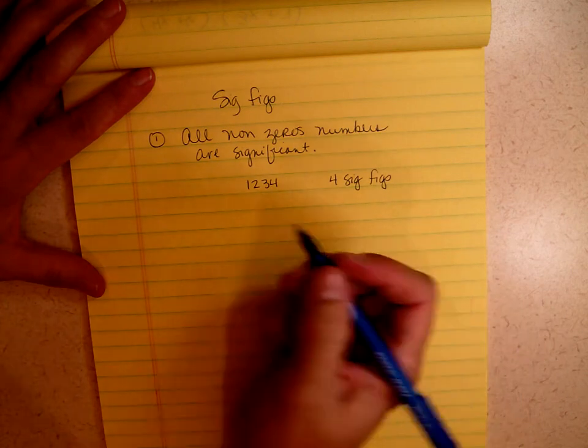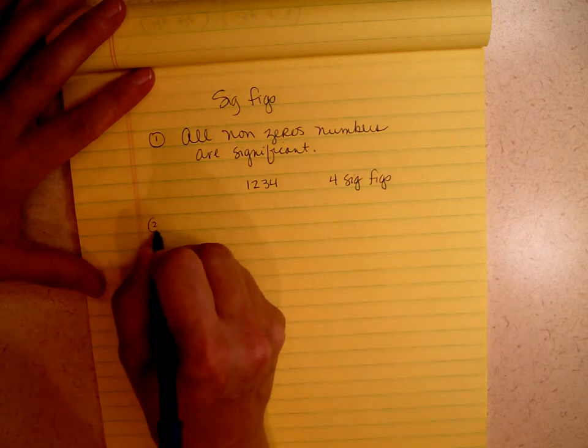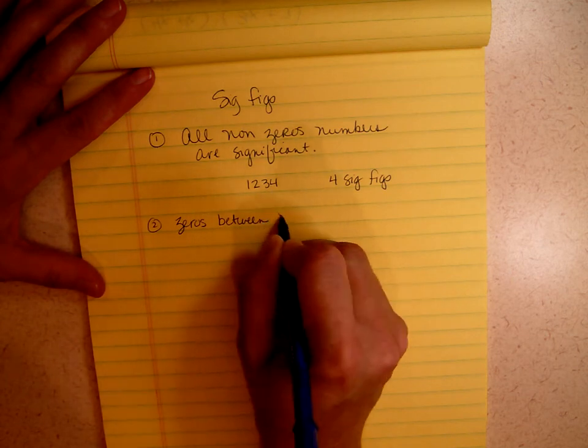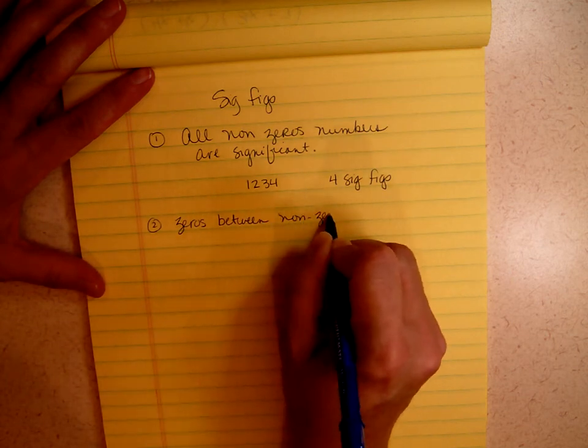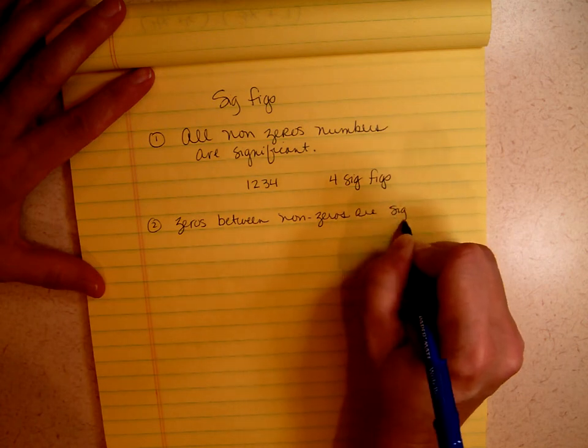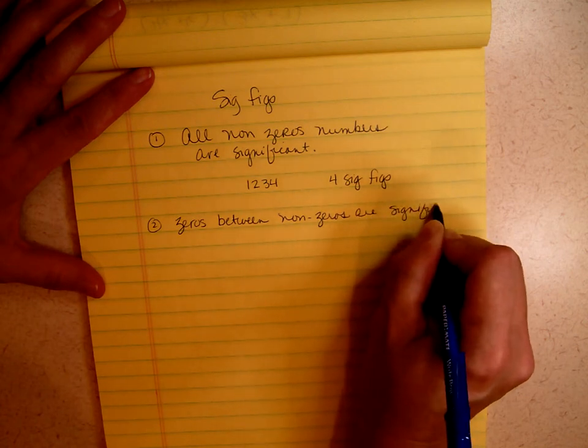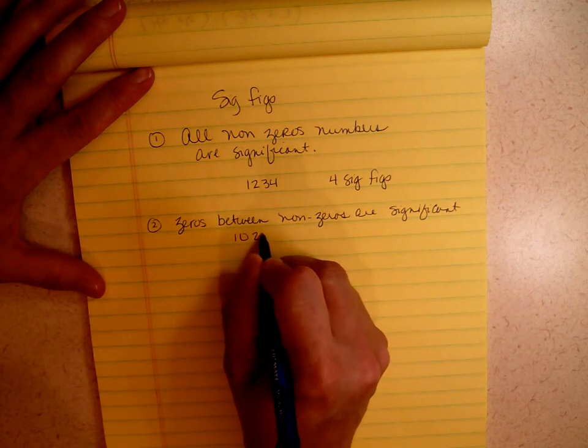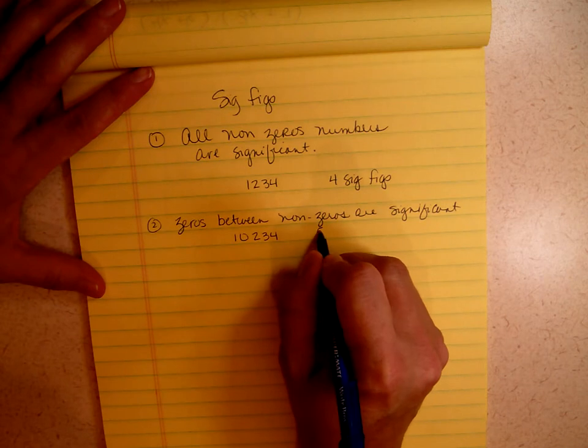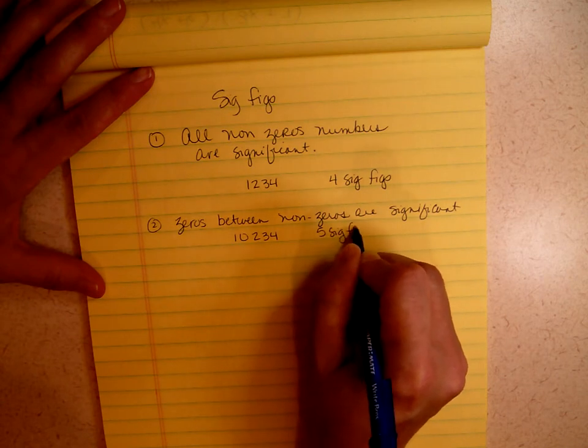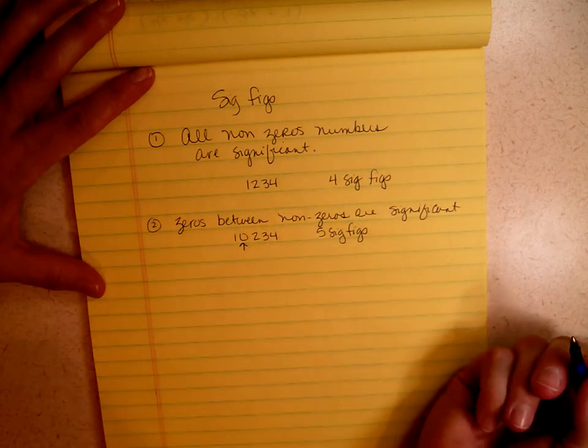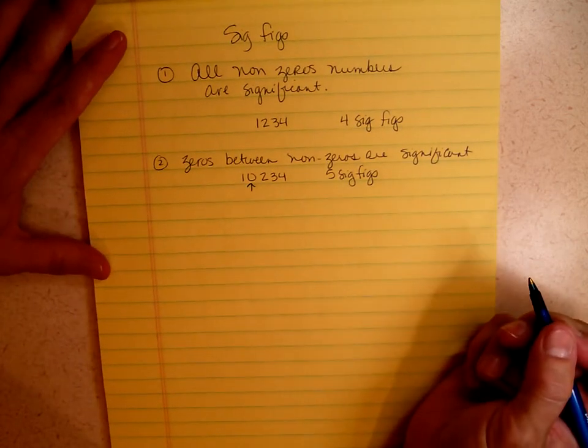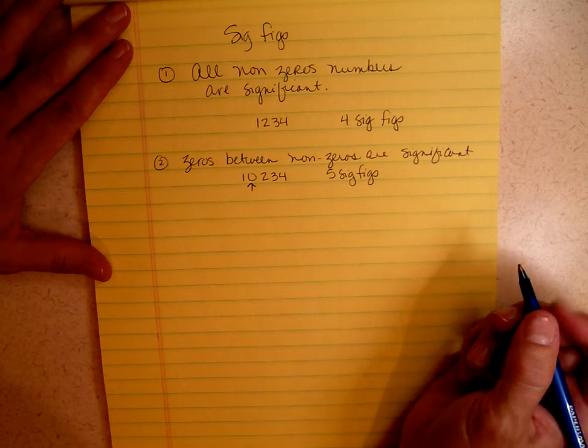Each one of those numbers is significant. Rule number 2, zeros between non-zeros are significant. So what does that mean? If I had 10234, there would be five sig figs. Although this number right here, that zero, is not a non-zero, it is between non-zeros, so it is significant.